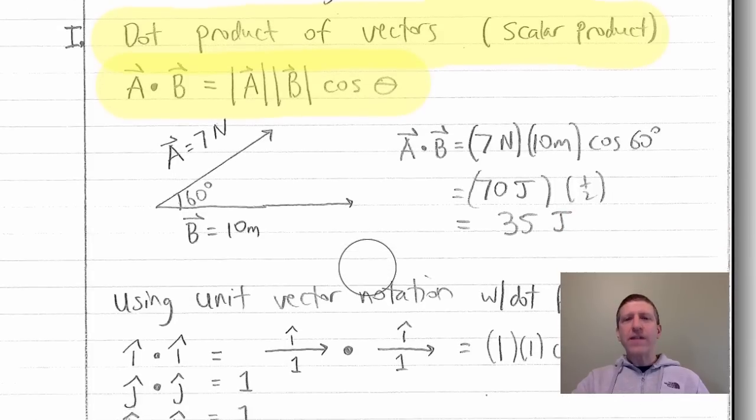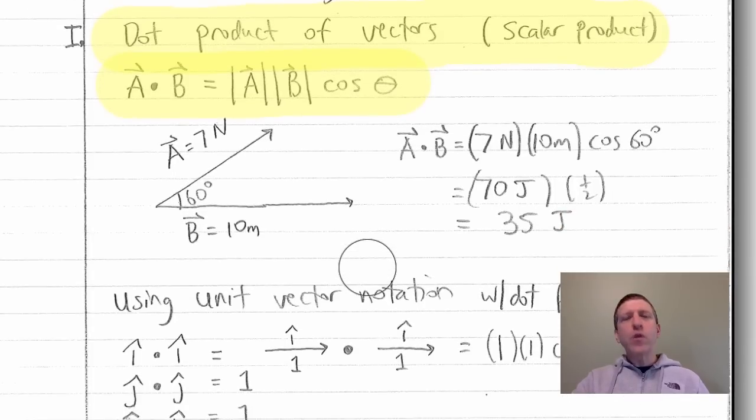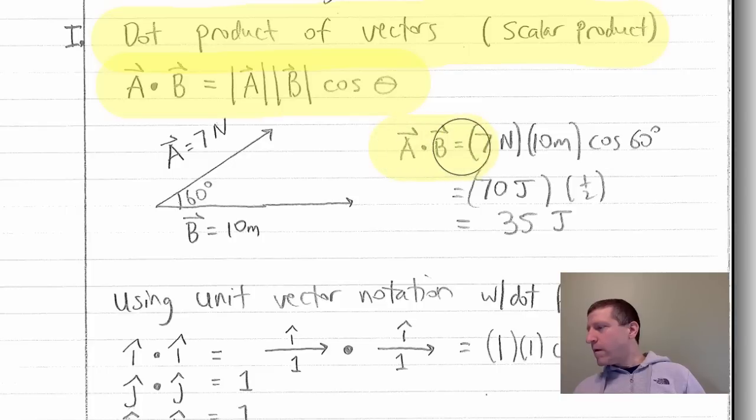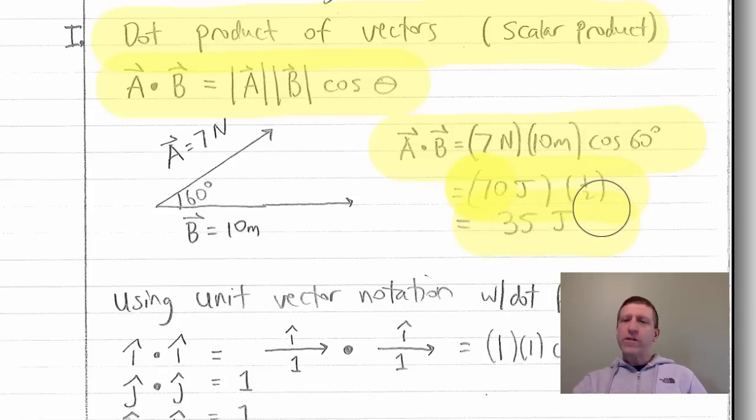A dot product of two vectors means you multiply the magnitude. Those absolute value signs right there mean magnitude. The magnitude of vector A times the magnitude of vector B. And then you multiply it by the cosine of the angle between them. Now, this is something that's used a lot in all kinds of different physics. And here's what it means. What this dot product is, is we are multiplying the two components of these vectors, which are parallel to each other. In other words, let's say I have a vector here of 7 newtons. I've got a vector here of 10 meters. If I want to, and the angle between them is 60 degrees. If I want A dot B, that'll be 7 newtons times 10 meters, but importantly, times the cosine of the angle between them. Cosine of 60 happens to be one half. So, what we get is, this times this is 70 joules. We multiply by half, we get 35 joules is the dot product of these two vectors.